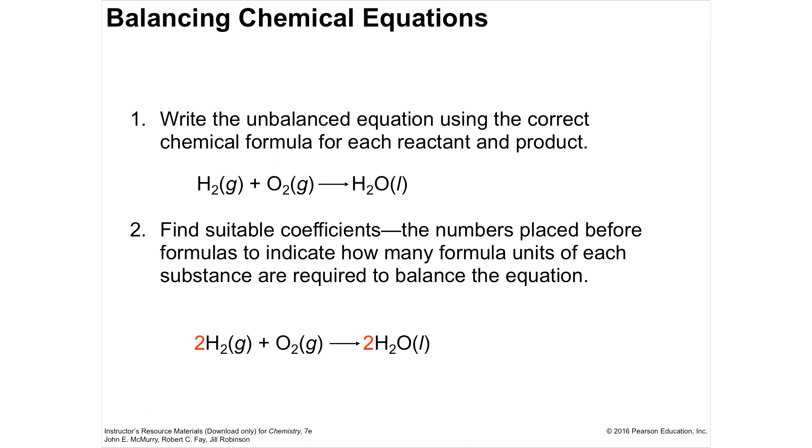So number one, here's the steps for balancing equation: write the unbalanced equation using correct chemical formula for each reactant product. So they're going to balance water here, hydrogen gas, and remember hydrogen's diatomic. So it's H2, oxygen is diatomic. There were seven of these that you need to know.